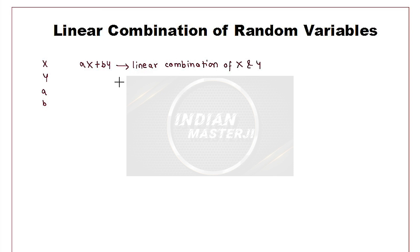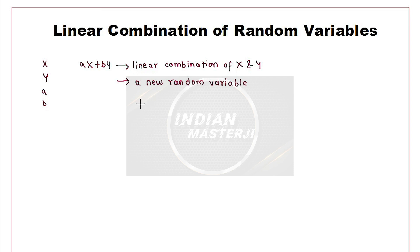This is nothing but a new random variable. Now if ax plus by is a new random variable, then this new random variable also will have some sort of mean and variance — it will have some sort of distribution of its own. Before understanding the mean and the variance of ax plus by, let's try to understand how we can have different examples of linear combination of random variables.